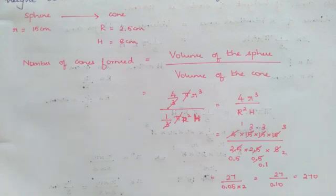Which means when we are having a sphere of radius 15 centimeter, if it is melted to make cones, you will be able to get 270 cones, each of which are of radius 2.5 centimeter and height 8 centimeter. That's it. Hope you all understood. Thank you.